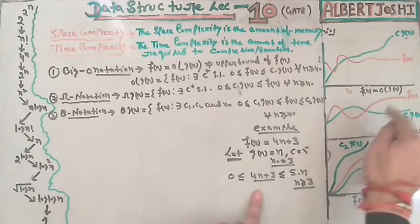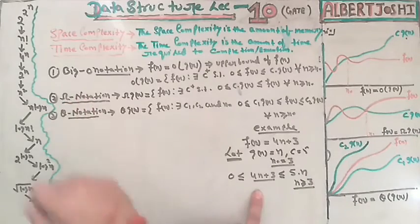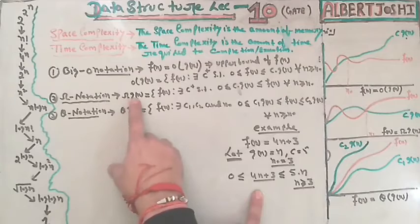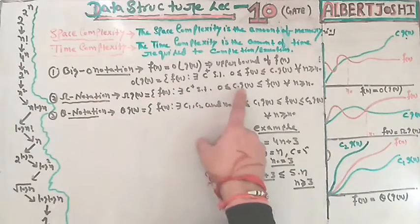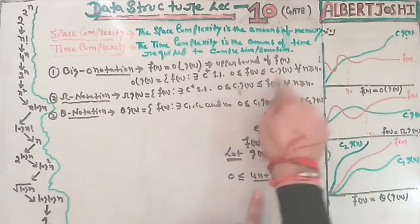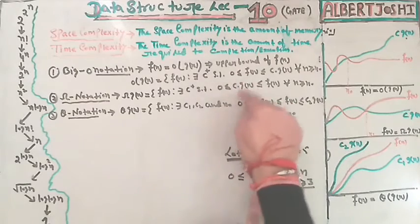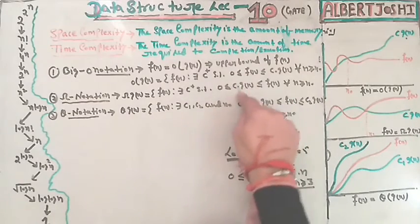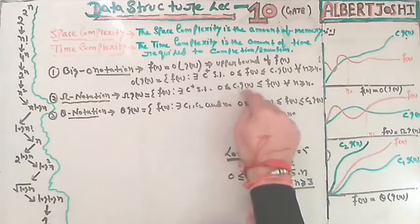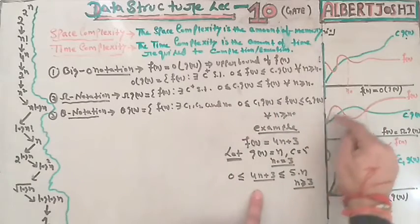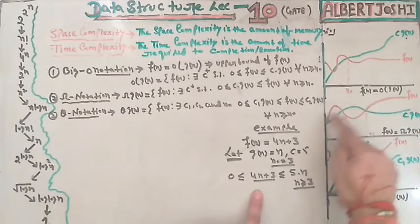The second notation is Omega (Ω) notation. This time you have to check whether any lower time-taking algorithm — a lower bounded function — exists. You need to find a positive constant c and function g(n) such that c·g(n) ≤ f(n) for all n ≥ n₀.